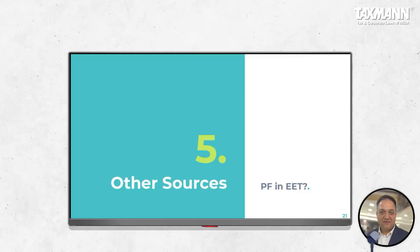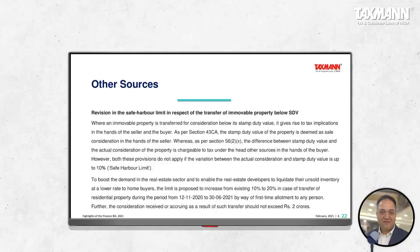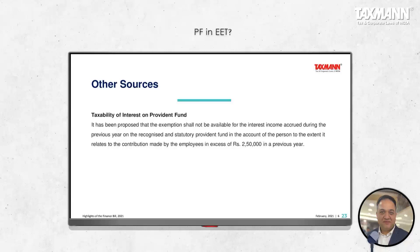Moving to other sources: PF in EET. There are four types of PF — recognized provident fund, statutory provident fund, unrecognized provident fund, and public provident fund. This change impacts only recognized and statutory provident fund. Unrecognized provident fund is excluded because amounts received are always taxable. Statutory, recognized, and PPF were always in the EEE category — now they may fall in EET category. Whether yes or no depends on your contribution level.